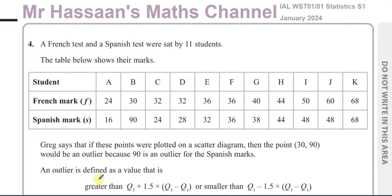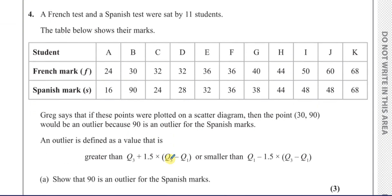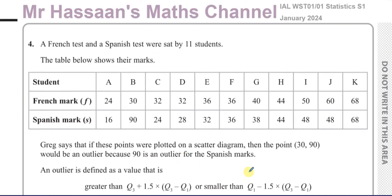So Greg says that 90 is an outlier for Spanish marks — we have to show that. You've got to be very careful here, because when figuring out the lowest value, the median, the lower quartile and upper quartile, the numbers have to be in order of size. Normally the numbers will be given in order, but there's a little trick here — the numbers are not in order of size.